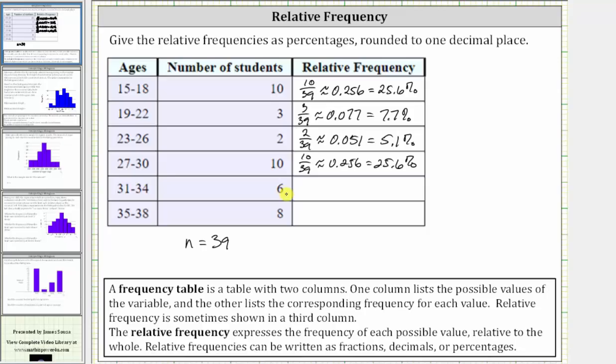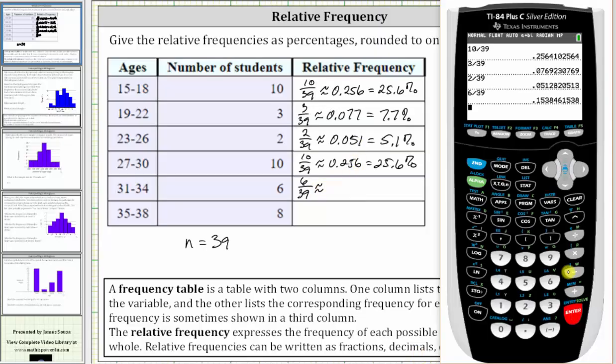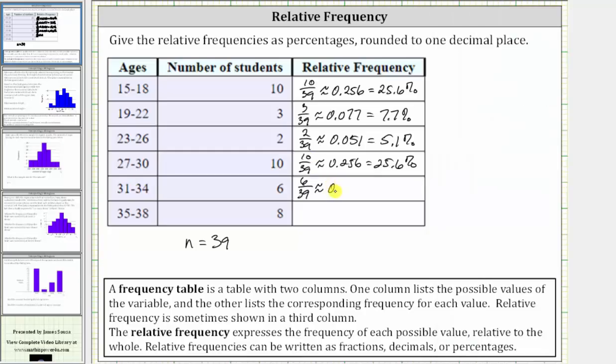Next, there are six students with ages 31 through 34. The relative frequency is 6/39, which simplifies to 2/13. But again, we'll convert to a decimal. To three decimal places, we have approximately 0.154, which is 15.4%.